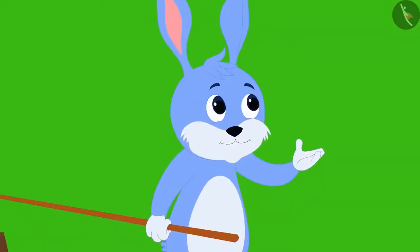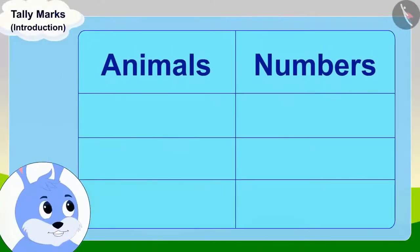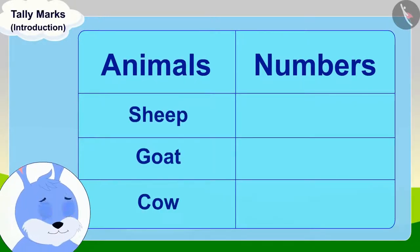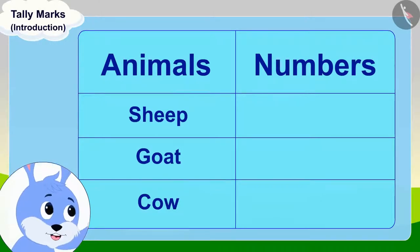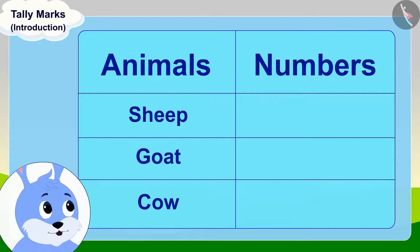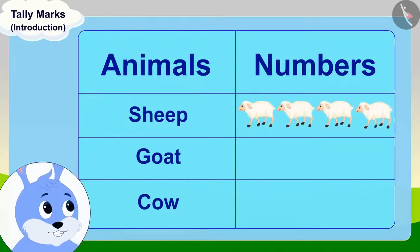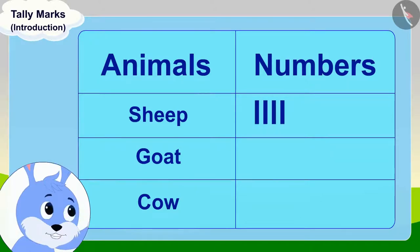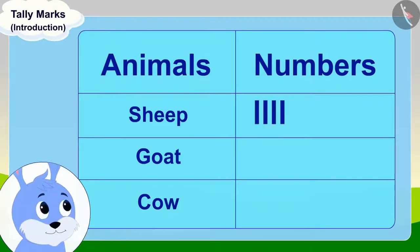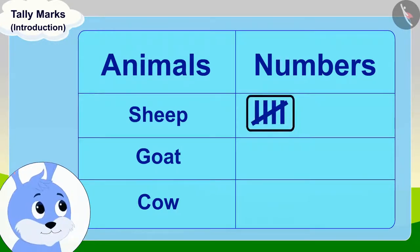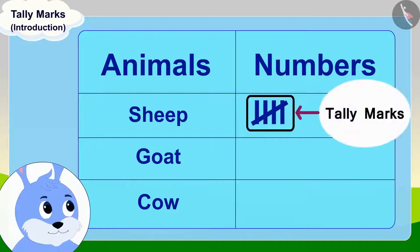Bunny explained: it is very easy. First, you make a table like this and write the names of all the things you have to count in it. Suppose you want to count your sheep first. Then you first draw four lines like this for four sheep.